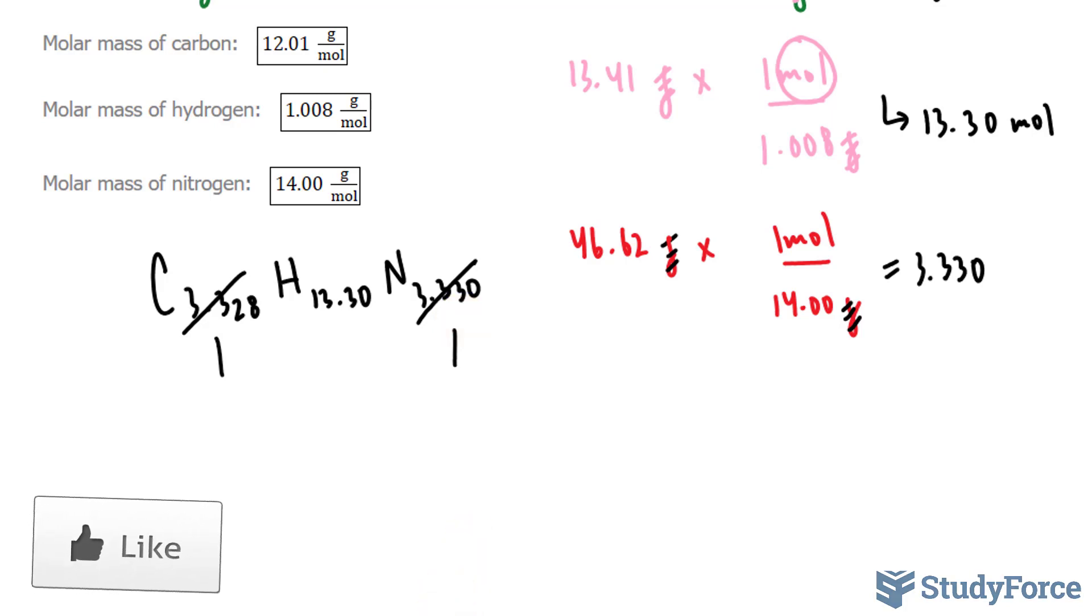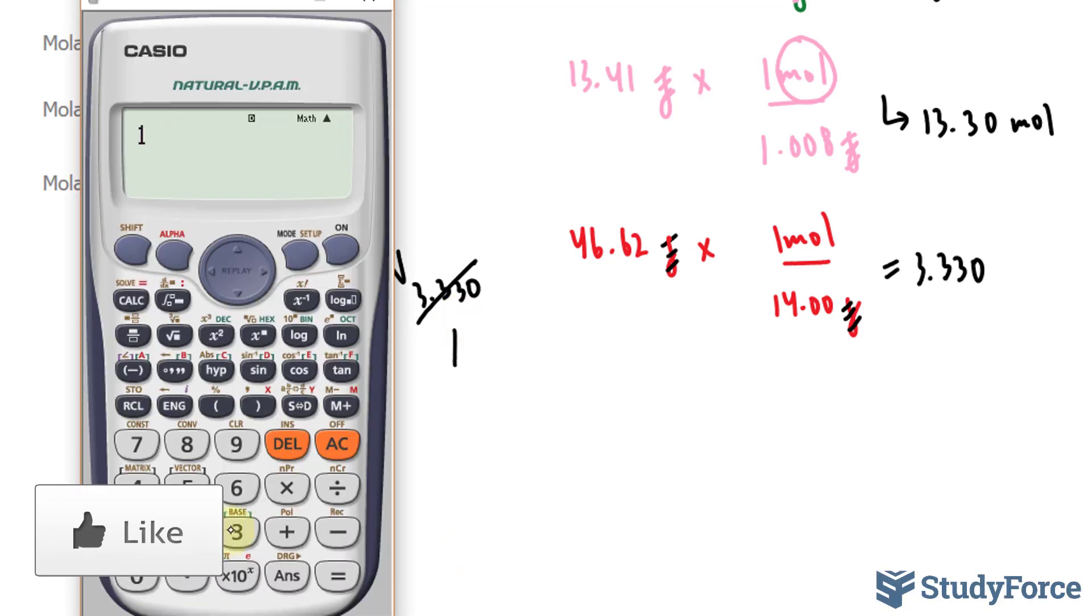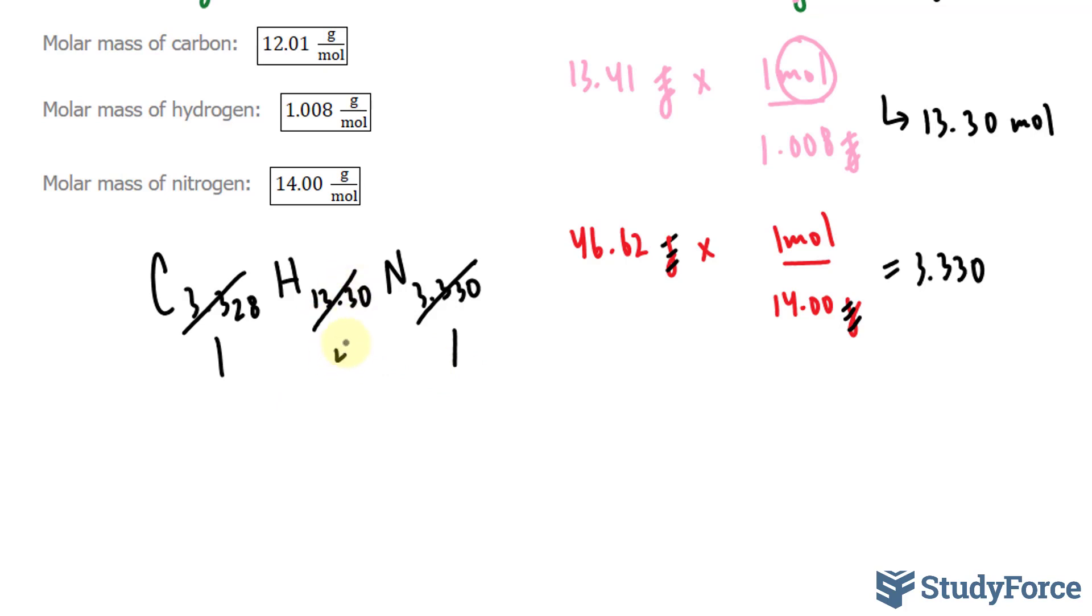What about 13.3? Let's use our calculator. 13.3 divided by approximately 3.3 gives me 4, around 4. So I have C, H4, N. This is my empirical formula.